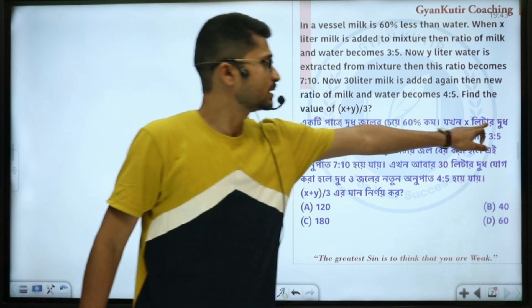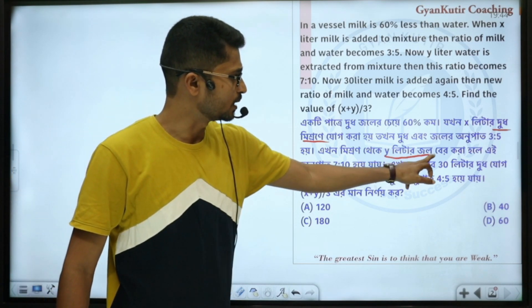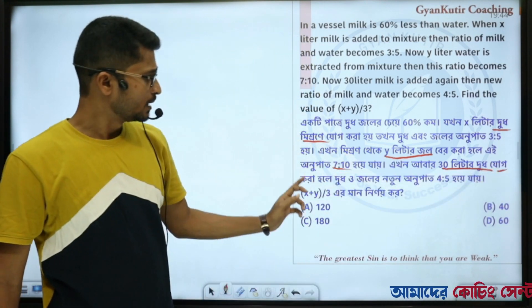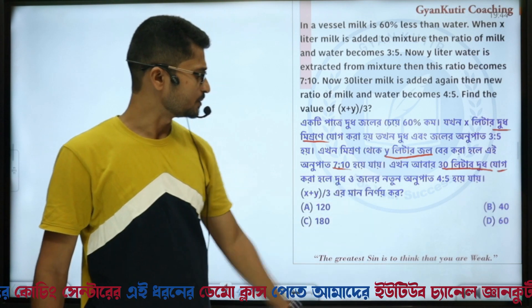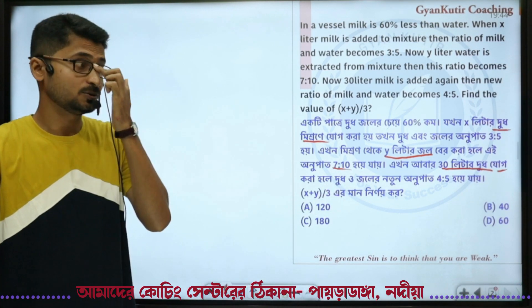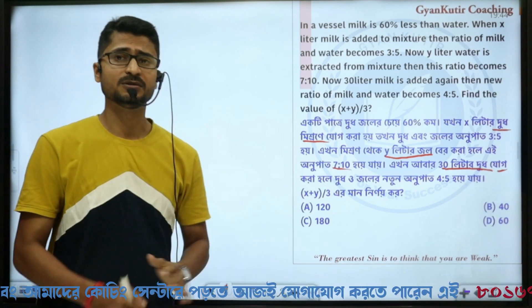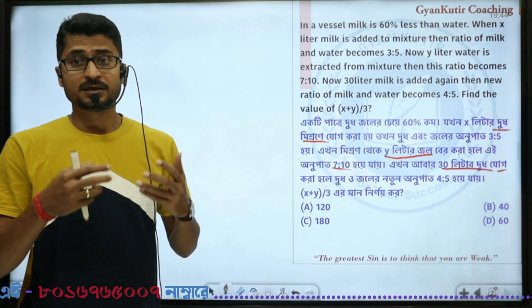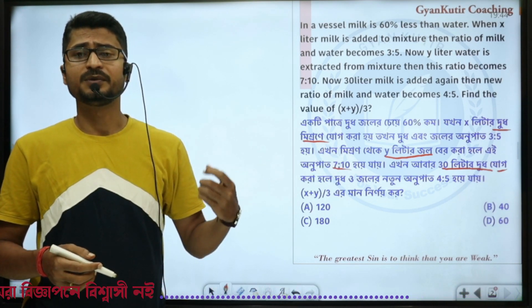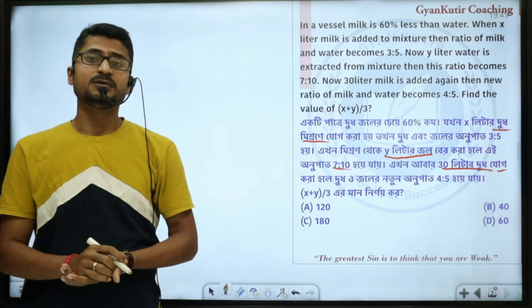Our part is greater than 1 — we know 2, 3. Our part is such that when from the mixture y liters of water is removed, the ratio becomes 7 to 10. When again 30 liters of milk is added, then the milk to water ratio that results — for that x plus by 3, the value becomes 9. If you solve using options it takes more time, but if you go by basics then three equations will come and it will be hard to solve.